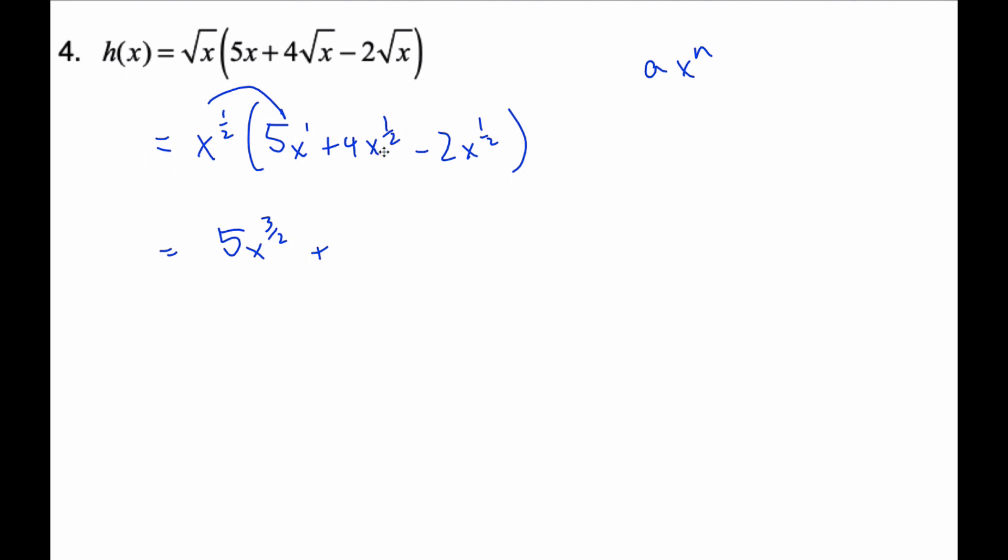x to the half times 4x to the half, I add the exponents, it's going to be 4x to the power of 1. Similarly, x here goes here, and these 1 half plus 1 half makes it to the power of 1. And so then it's 5x to the 3 halves plus 2x.